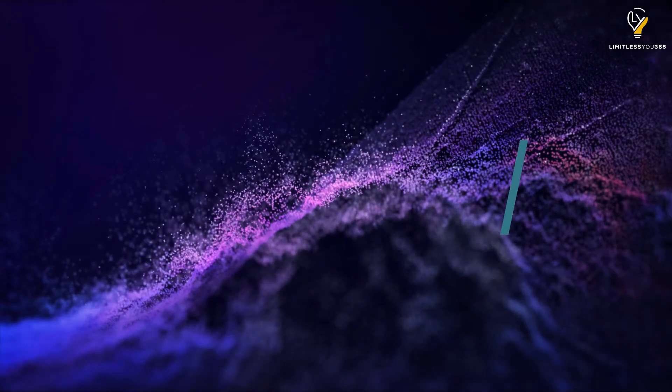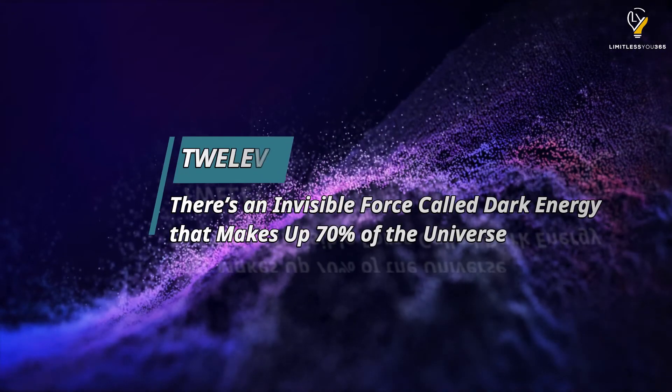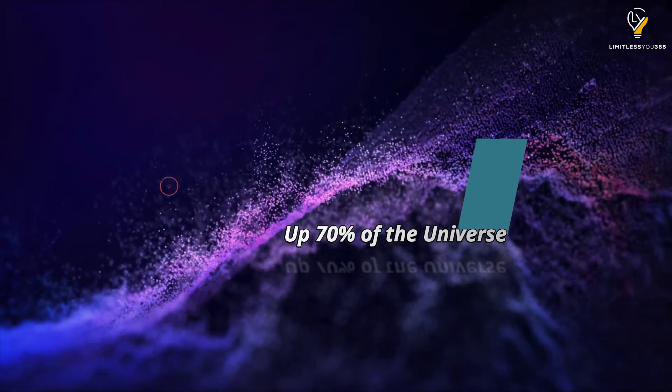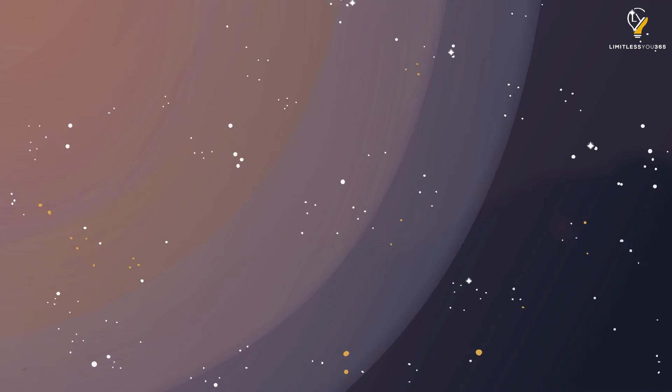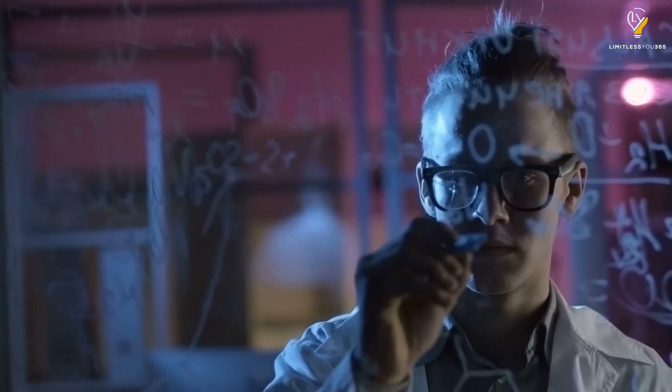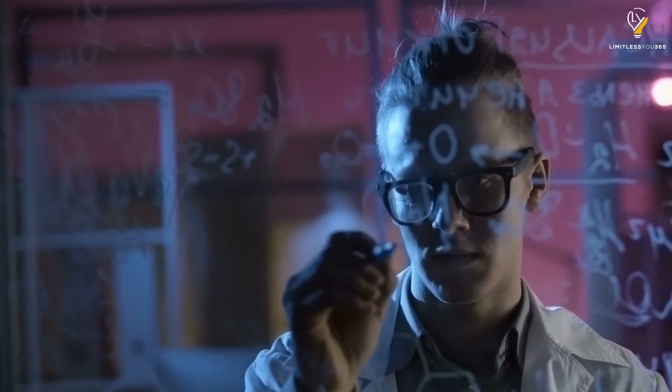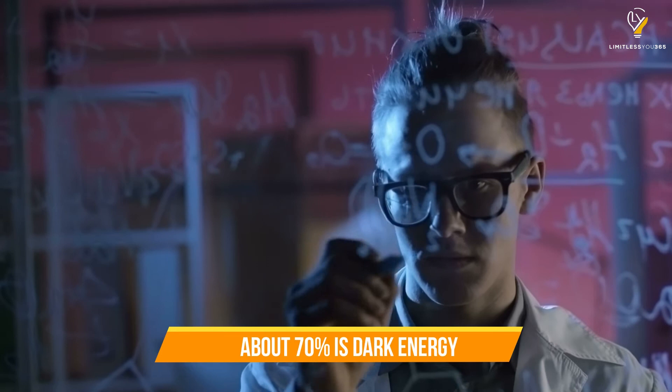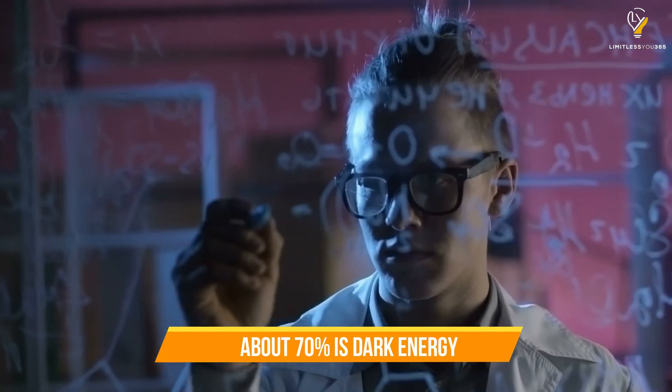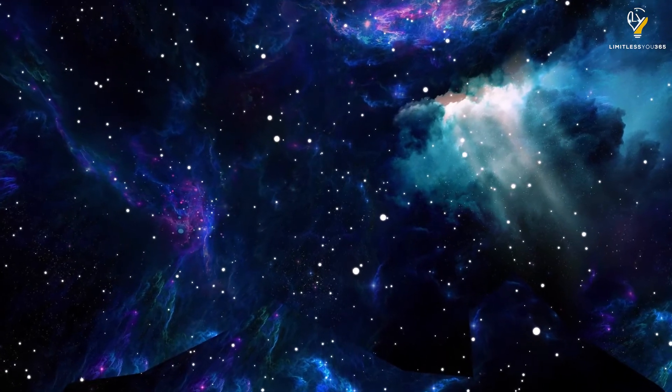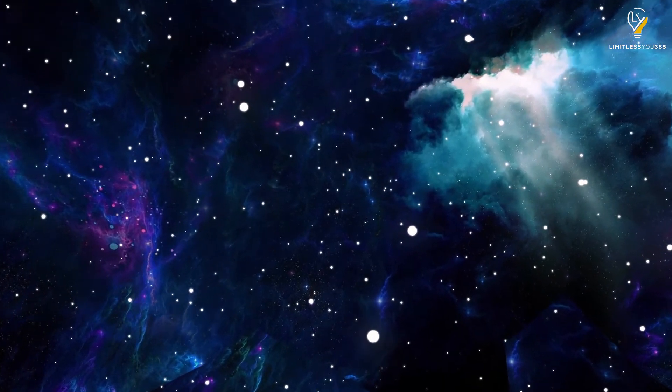Number twelve: There's an invisible force called dark energy that makes up 70% of the universe. Dark energy is one of the biggest mysteries of the universe. Scientists don't know what it is or where it comes from, but they do know that it makes up a huge majority of the universe, about 70%. It's what's causing the expansion of the universe to speed up. So it's pretty important.